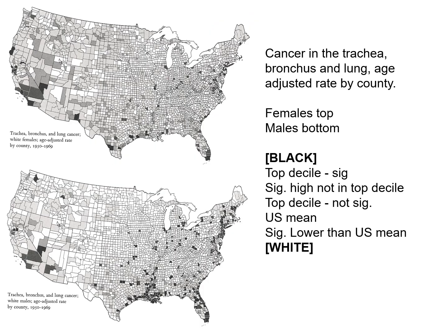Here's a figure showing deaths from cancer of the trachea, bronchus, and lung, age-adjusted by county, for females and males separately. Every county has a shade of gray — the top decile (top 10%) is shaded black, and white indicates significantly lower than the US mean. The darker the county, the higher the lung cancer rate. What would be a gigantic table of numbers becomes a graphical representation with thousands of data points that are easy to see.